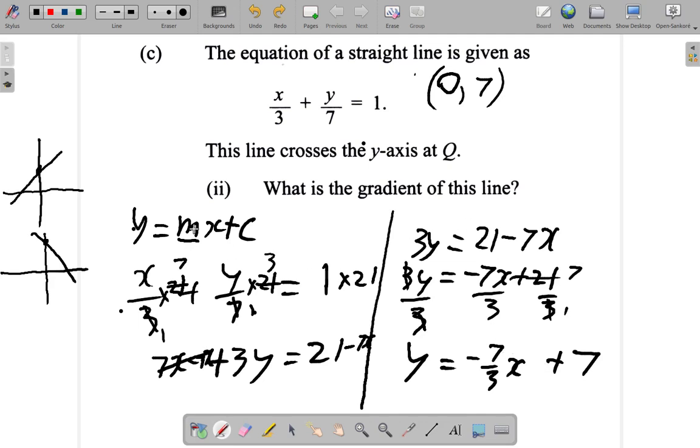Now, m is the number that multiplies x. Negative 7 over 3 is the number that multiplies x. So the gradient is negative 7 over 3. That is one way I could figure it out.